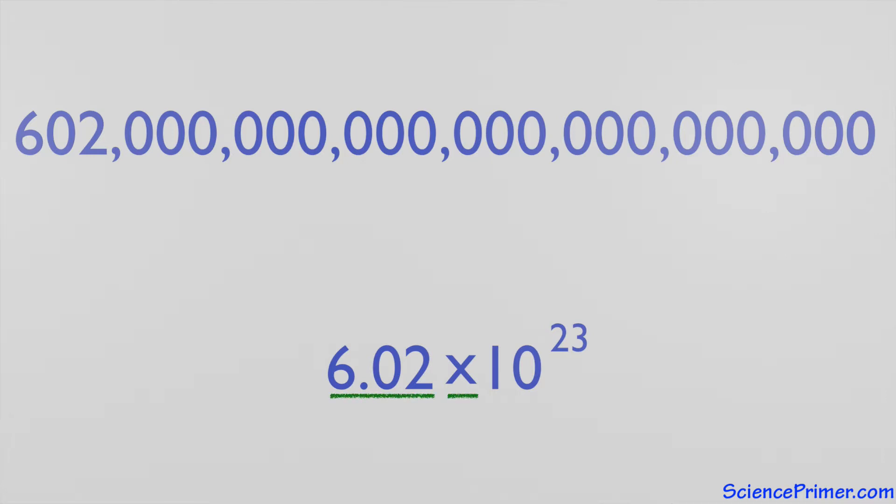A number followed by the multiplication sign followed by the number 10 raised to a power. The number to the left of the multiplication symbol is called the coefficient. The value that 10 is raised to is called the exponent.